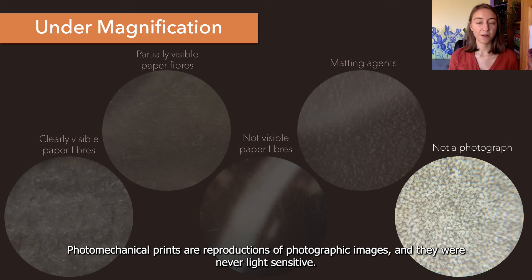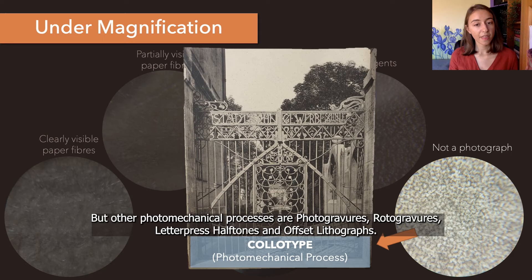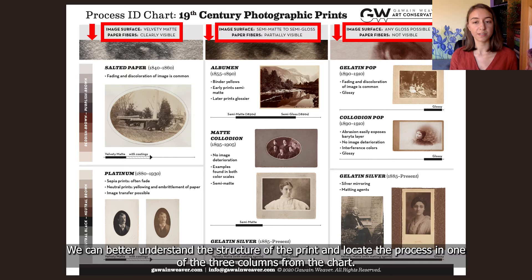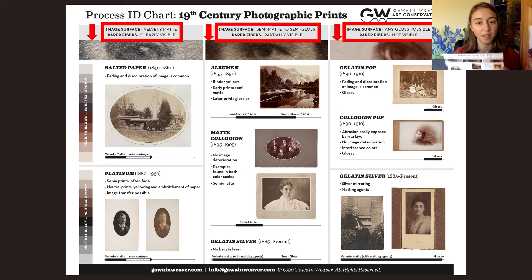Photomechanical prints are reproductions of photographic images and they were never light sensitive. The example presented in the last circle is a collotype. Other photomechanical processes are photogravures, rotogravures, letterpress, halftones, and offset lithographs. By considering the image surface and by looking under magnification, we can better understand the structure of the print and locate the process in one of the three columns from the chart.